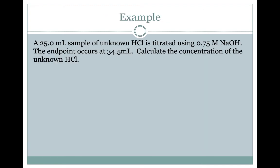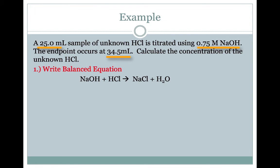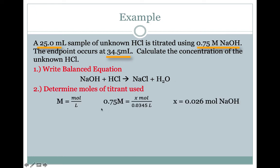Let's try some practice. A 25-milliliter solution of unknown HCl is titrated using 0.75 molar NaOH. The endpoint occurs at 34.5 milliliters. Calculate the concentration of the unknown HCl. First, we write a balanced equation — these will always be neutralization reactions for acid-base titrations. Then we determine the moles of titrant, or NaOH, used. Using the molarity equation, we plug in the molarity of NaOH, 0.75, and the volume of NaOH, 0.035 liters, and calculate that we added 0.026 moles of NaOH to reach the equivalence point and exactly neutralize all of the HCl.